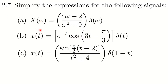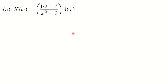Question 2.7. We have three signals and for each signal we have expressions. We want to simplify the expressions — if you look here, you see that the expression is a multiplication of two parts, and the second part is a Dirac delta function. We want to simplify this, so let's go one by one.